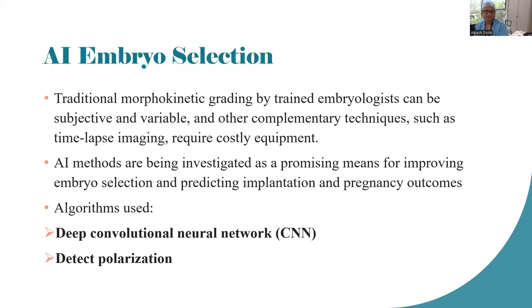On embryo quality — we move on to AI embryo selection. We have all been using morphokinetic grading for many years, certainly even down the microscope, whereby we look at the number of cells, the fragmentation in the embryos, and the grade of the blastocyst in terms of the inner cell mass and trophectoderm.